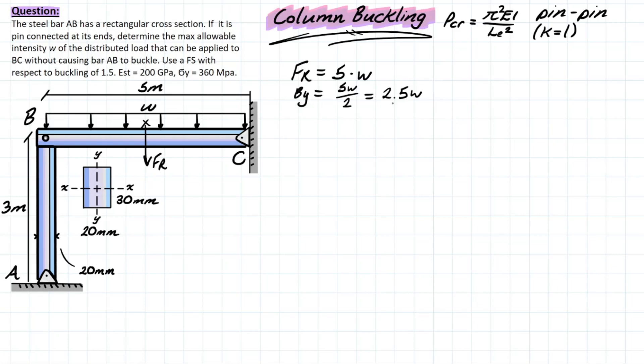If we think about the factor of safety now, we can simply apply this to the reaction at the top in order to account for that factor. So if we took this now as a Pcr, we can simply equal it to By times FS, which is our factor of safety, and that's going to be 2.5w times 1.5, leaving us with 3.75w.